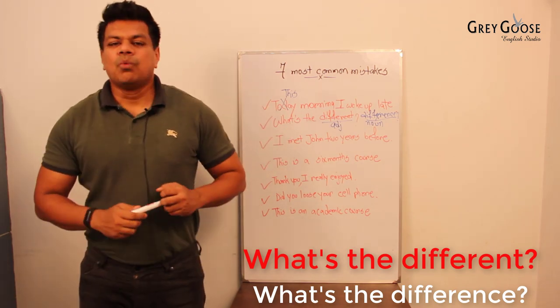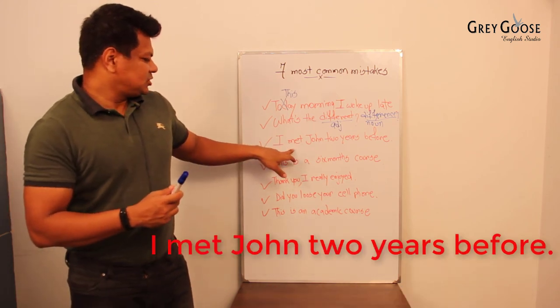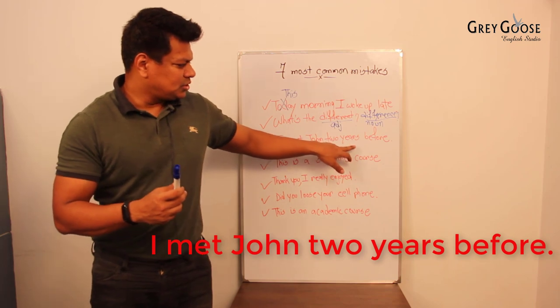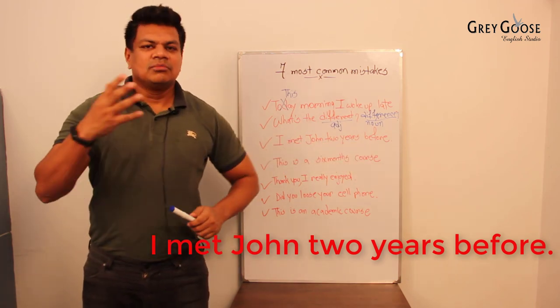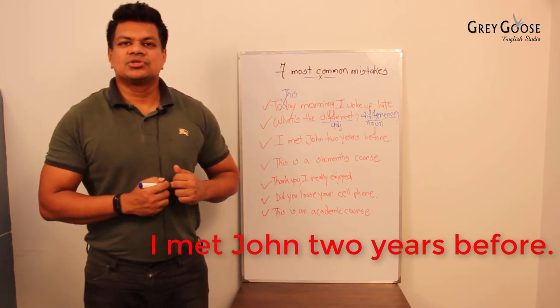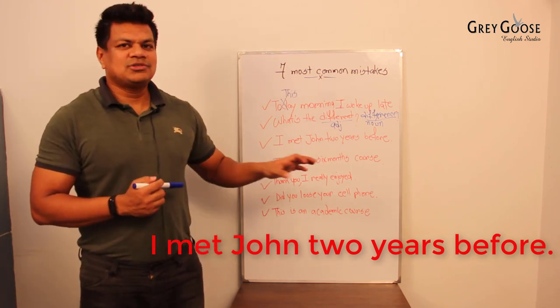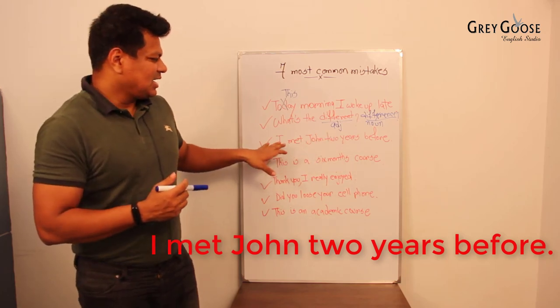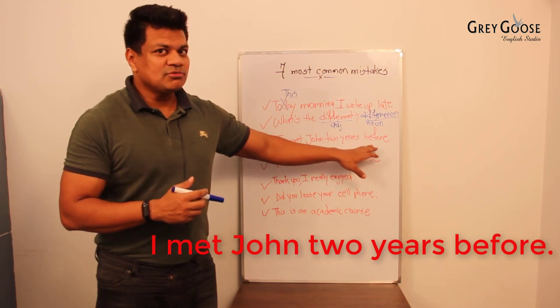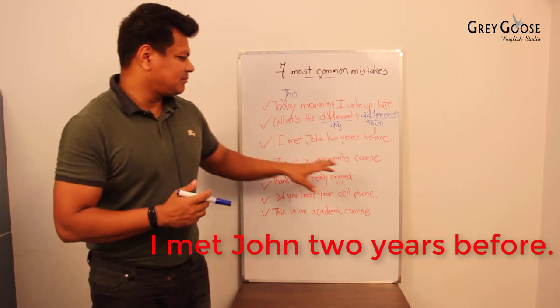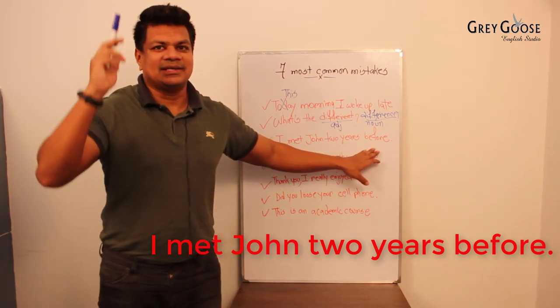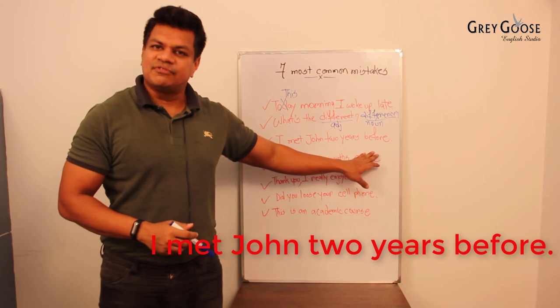Now some of you might find that correct: 'I met John two years before.' Literally, you would feel that this is correct. But see, 'I met John two years before' you can write if you have some add-on thereafter. For example, 'I met John two years before I went to Canada.' So if you get some more addition after 'before,'